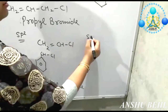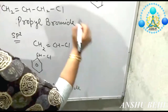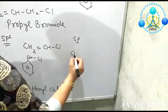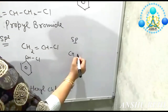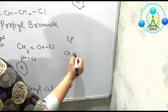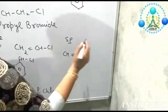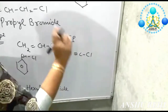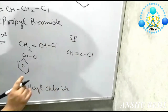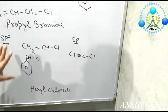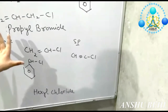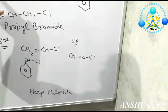Then you can have sp hybridization. In sp hybridization, the carbon attached to benzene is having a triple bond. So three types of hybridization have been discussed: sp3, sp2, and sp.